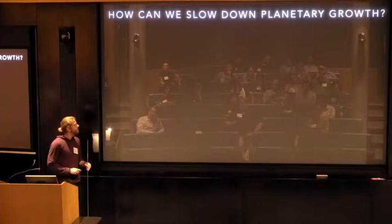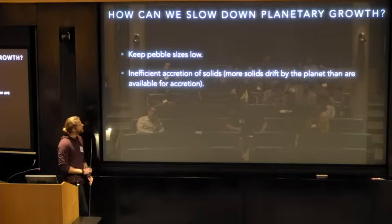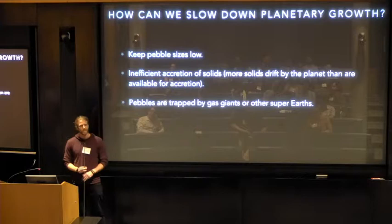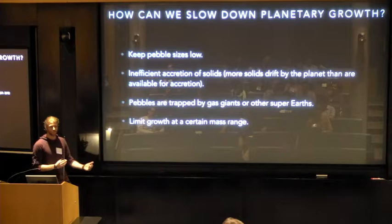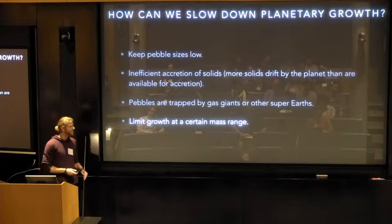But this is particularly intriguing because we've got a lot of cores right in the size where we expect pebble accretion to be extremely rapid. So how can we slow this growth down? Well, there's a lot of different possibilities. One is we can just keep pebble sizes quite low. If you saw on the left-hand side of the plot that I showed before, with low pebble sizes or just no pebbles, you don't grow very fast. There could be very inefficient accretion of solids. That's something people sometimes appeal to, that pebbles tend to drift by cores instead of being accreted by them. You could also have pebble traps, as has already been talked about a little bit here, so you could have gas giants growing and trapping the inflow of pebbles or other super-Earth planets growing and trapping pebbles.